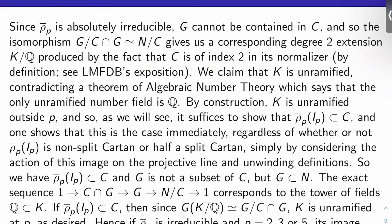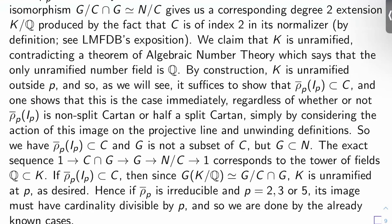Galois theory again. The fact that this guy has order 2 gives me a degree 2 extension K over Q. I claim that K is unramified, which contradicts a theorem of algebraic number theory that says that the only unramified number field is Q. By construction, K is definitely unramified outside P because rho bar P is unramified outside P.